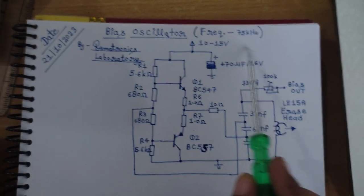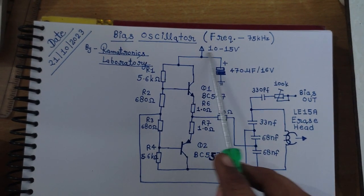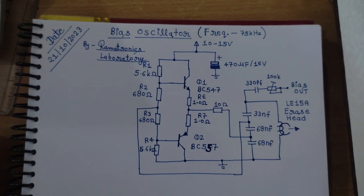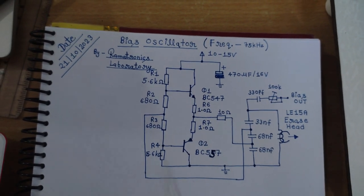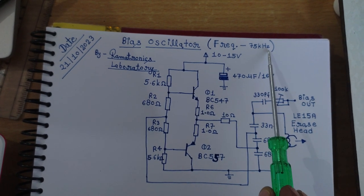And I am powering this whole circuit with a 10 to 15 volt lab bench power supply. And the oscillating frequency of this BIOS oscillator is 75 kilohertz.